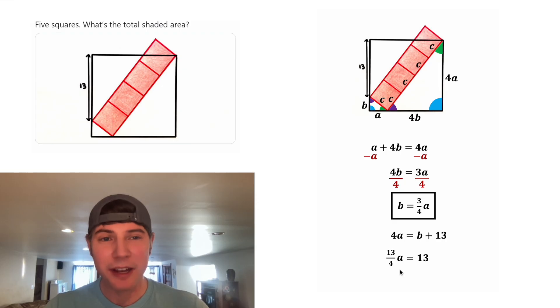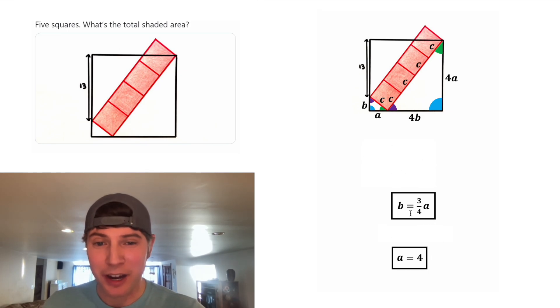Now to get the A all by itself, we'll multiply both sides by the reciprocal four thirteenths. On the left-hand side, these are going to cancel each other out. And on the right-hand side, these two thirteens will cancel each other out. So we end up with A is equal to four. And this looks important, so let's put a box around it.